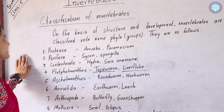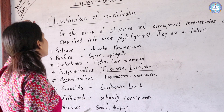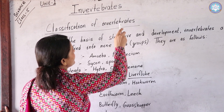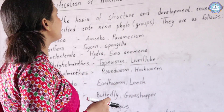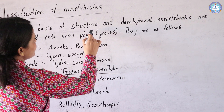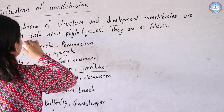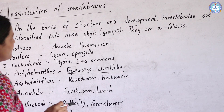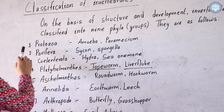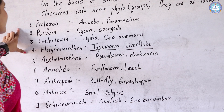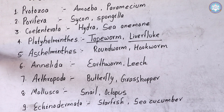After the introduction and characteristics of invertebrates, we will read the classification of invertebrates. We classify invertebrates on the basis of their basic features — structure and development. There are nine phyla. First, let's learn how to pronounce all of them.